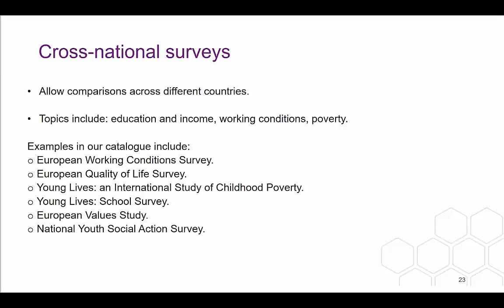There is another type of microdata I want to mention briefly — cross-national surveys. Cross-national surveys use the same survey instrument and, where possible, the same methodology and fieldwork protocols, allowing comparisons to be made across many countries and nations. Common topics covered include education, income, working conditions and poverty. Examples in our catalogue include the European Working Conditions Survey, European Quality of Life Survey, Young Lives: An International Study of Childhood Poverty, the European Values Study and the National Youth Social Action Survey.